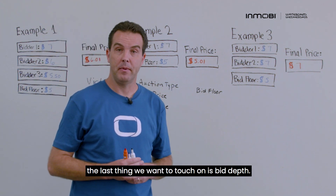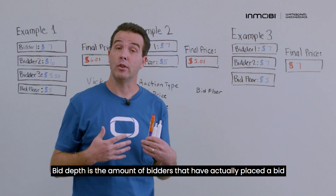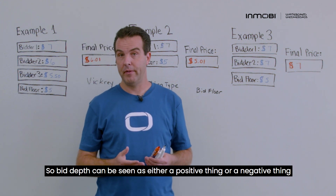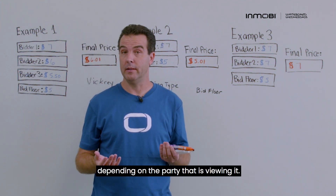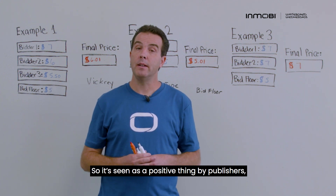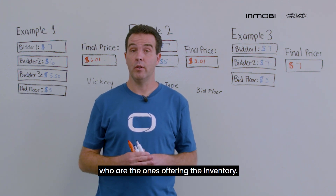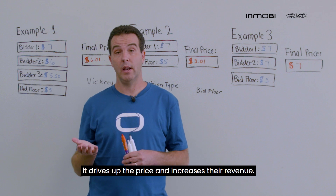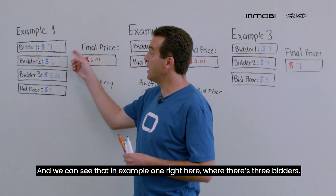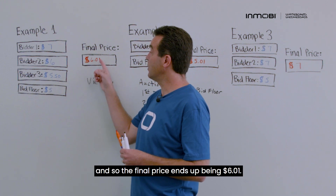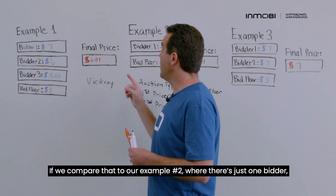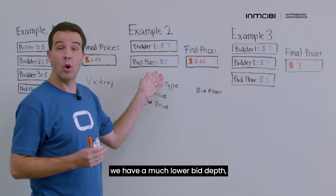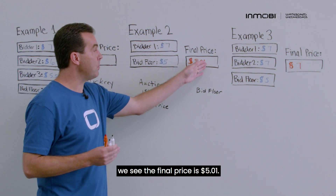Now that we've run through the examples, the last thing to touch on is bid depth. Bid depth is the number of bidders that have actually placed a bid and are eligible to win the auction. Bid depth can be seen as either a positive or negative thing depending on who's viewing it. Publishers — those offering the inventory — want greater bid depth because more bidders drives up the price and increases their revenue. We can see that in Example One, where three bidders result in a final price of $6.01, compared to Example Two with just one bidder, where the final price is $5.01.